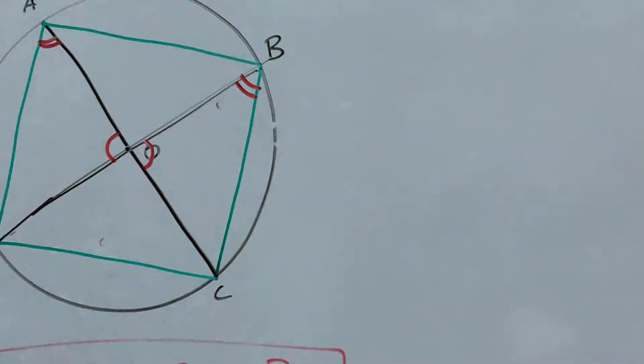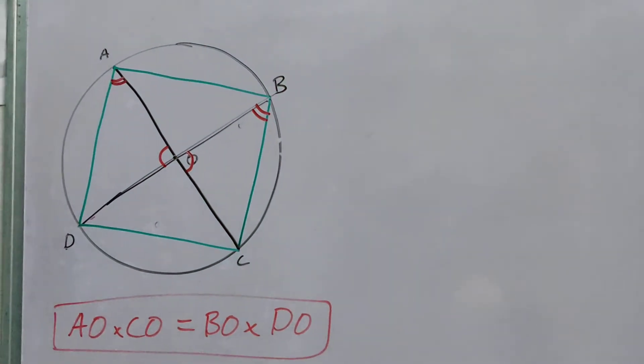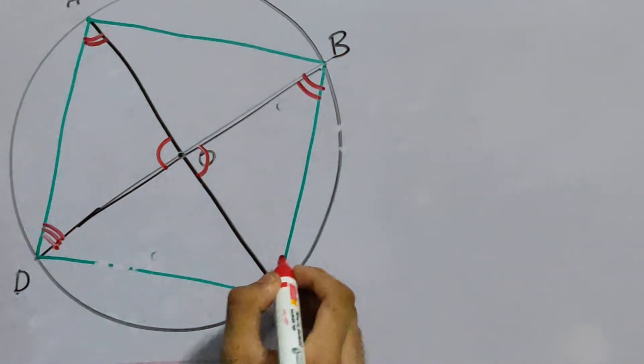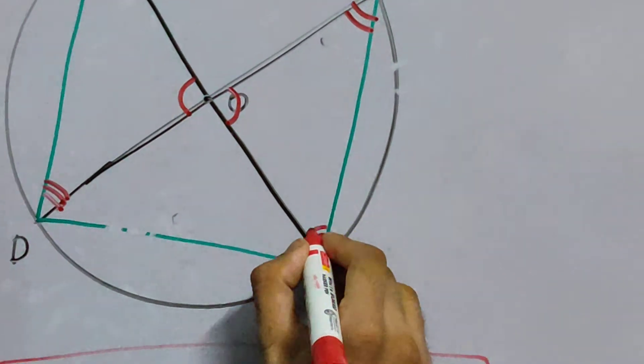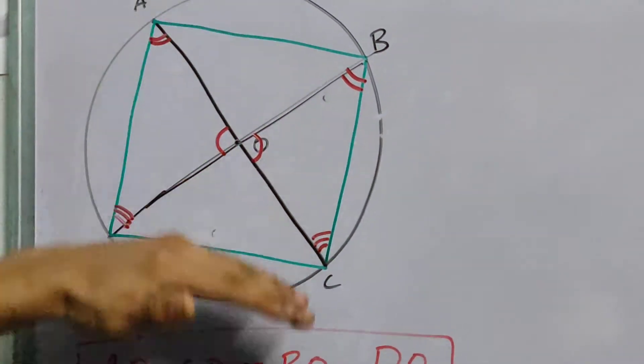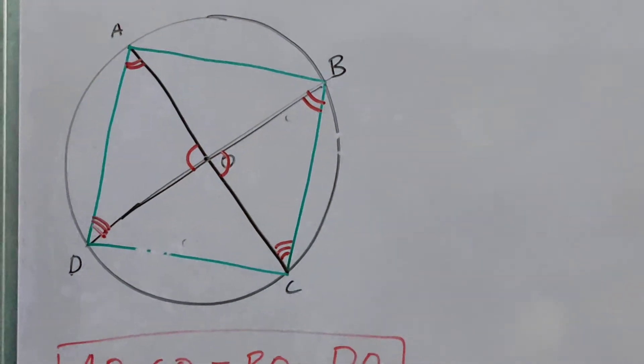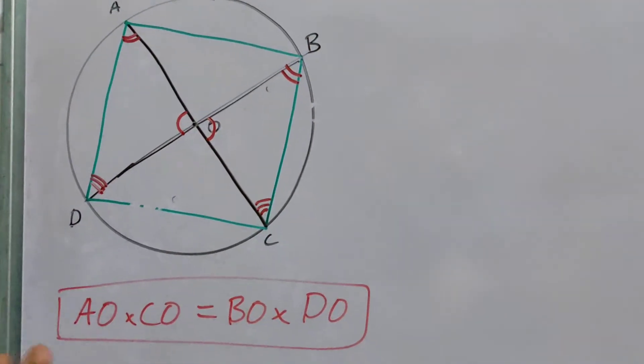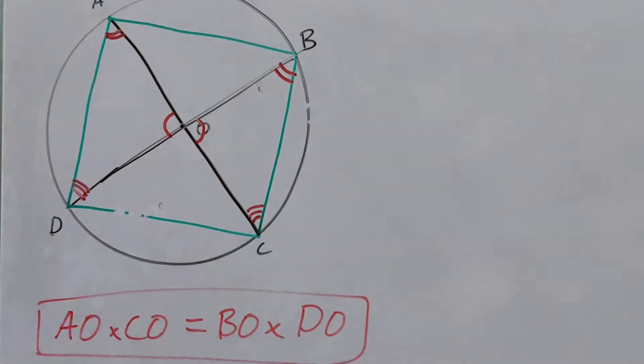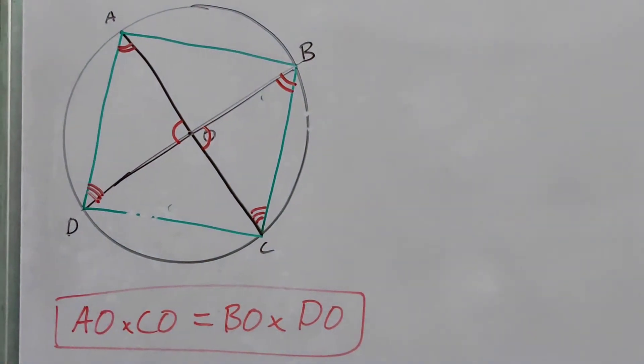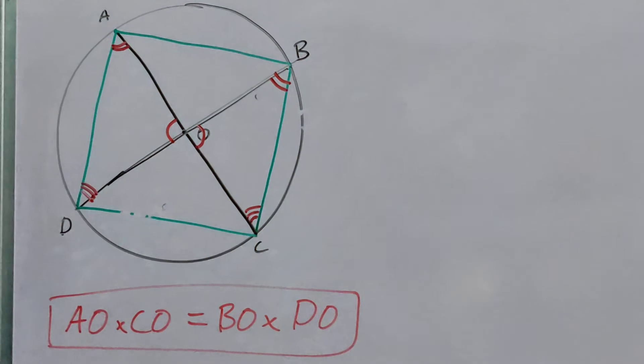We are using the properties of cyclic quadrilaterals here, and these two angles being equal also follows, because a similar thing happens from this side also. Now that you have two similar triangles, you can easily find the two similar triangles and prove this, so pause this video and try to approach this on your own. Now that you have given it a try, let's do this.